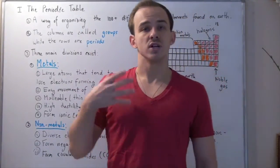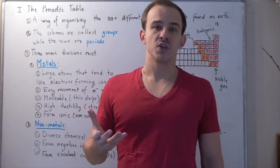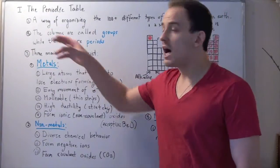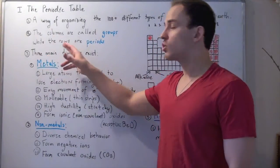That means we need a very good way of organizing all these elements. And the periodic table does just that. What it does is it organizes our elements, or atoms, into columns and rows. Now, the columns are known as groups, or families, while the rows are called periods.